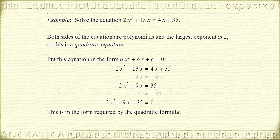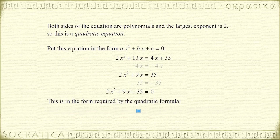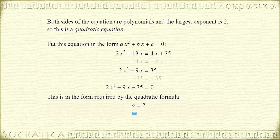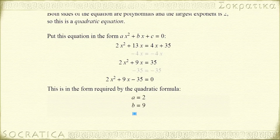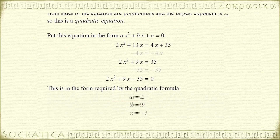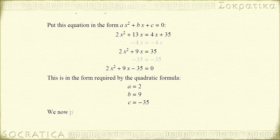We see that a equals 2 — a is the coefficient of x squared. b equals 9 — b is the coefficient of x. c equals negative 35 — c is the constant term of this equation. Let's now plug these values into the quadratic formula.